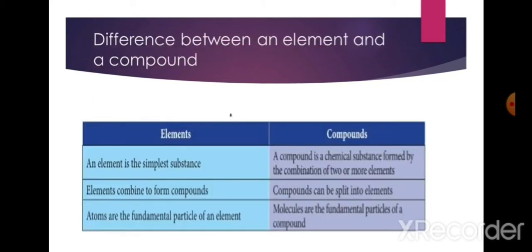Difference between an element and a compound: an element is the simplest substance. A compound is a chemical substance formed by the combination of two or more elements. Elements combine to form compounds. Compounds can be split into elements. Atoms are the fundamental particles of an element; molecules are the fundamental particles of a compound.